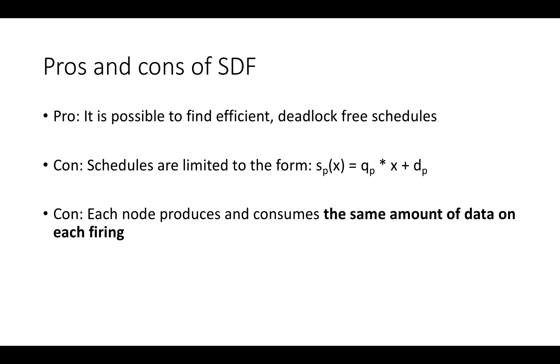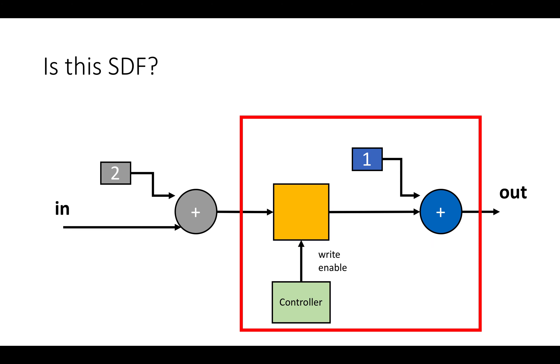So to understand why that's such a significant restriction, let's go back to our original circuit. So here's the optimized hardware that we want to generate for our upsampling operation. Is this SDF? Well, the input adder is an SDF node, because it takes in one piece of data and produces one piece of data on each activation of the adder.